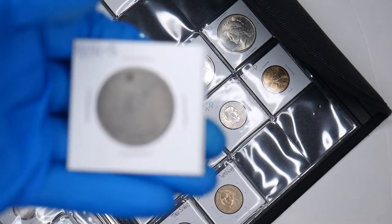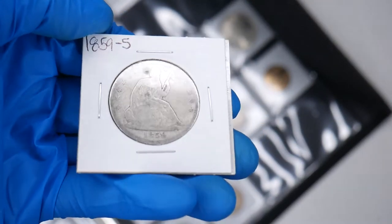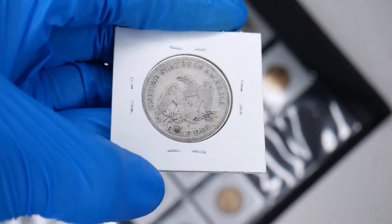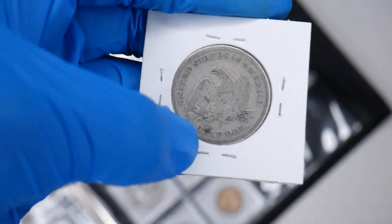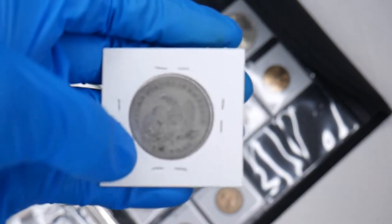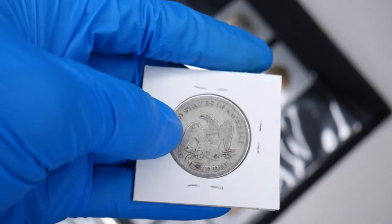The next one is a Liberty Seated no motto half dollar from 1859. And this is San Francisco. The S kind of looks like a five, but there's the S mint mark. Really beautiful. I love how it has half doll instead of completely finishing it. And it just has a period right there. I love this design so much. The Eagle looks like a beast. He looks really cool.